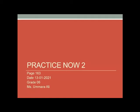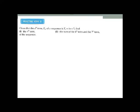Assalamu alaikum, class. Today we are doing chapter number seven: Number Patterns. It's Practice Now one, on page number 163. Open your book to page 163. You will find the question: given that the nth term tn of a sequence is tn = 4n + 7, find the fourth term.